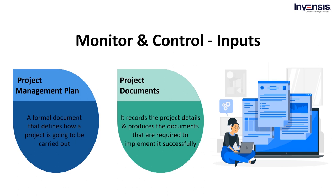Then we have the project documents. We will discuss various components that the project document comprises. To begin with, we have the assumption log, which contains information about expectations and points that might have an effect on the project. Then we have the basis of estimates, which indicates how various estimates were derived and can be used to decide how to respond to differences of opinion. Next is the cost forecast, which uses previous project performance to determine if the project is within the defined tolerances for the budget and if any necessary changes will occur.